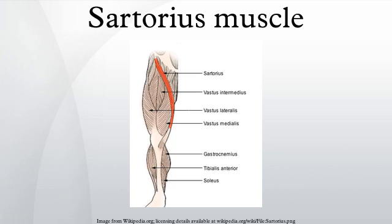Variation: slips of origin from the outer end of the inguinal ligament, the notch of the ilium, the iliopectineal line, or the pubis may occur. The muscle may be split into two parts, and one part may be inserted into the fascia latae, the femur, the ligament of the patella, or the tendon of the semitendinosus. The tendon of insertion may end in the fascia latae, the capsule of the knee joint, or the fascia of the leg. The muscle may be absent.